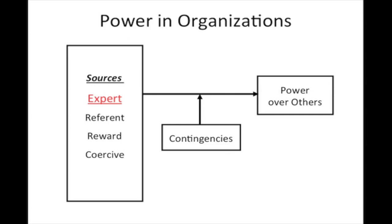Next we have reward power — the ability to control the allocation of rewards that are valued by others, and even to remove negative sanctions. Reward power operates both upward and downward: supervisors can provide rewards to subordinates, but subordinates can also provide rewards to supervisors, so it's a two-way street. The opposite side of that coin is coercive power — the ability to apply punishment. This also can be exhibited upward as well as downward. Think about something many of us experience daily: peer pressure. When our peers influence us to do something we otherwise may not have done, they have coercive power.